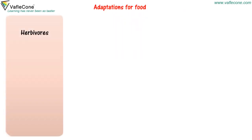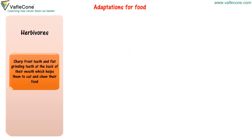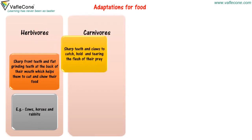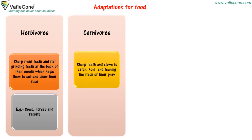Herbivores: They have sharp front teeth and flat grinding teeth at the back of their mouth, which helps them cut and chew their food. For example, cows, horses, and rabbits. Carnivores: They have sharp teeth and claws to catch, hold, and tear the flesh of their prey. For example, tiger, lion, eagles, and vultures.